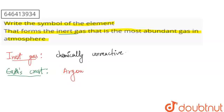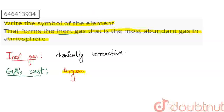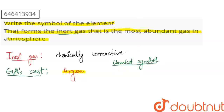If I talk about gases in the atmosphere, we have oxygen, nitrogen — but if we talk about inert gas in the atmosphere, Argon is the most abundant. Now, if we talk about chemical symbols, Argon is the chemical name, and the chemical symbol is usually the first two letters of the chemical name. In the case of Argon, it is 'Ar'. By convention, the first letter is capital and the second letter is small. So, 'Ar' is the chemical symbol.